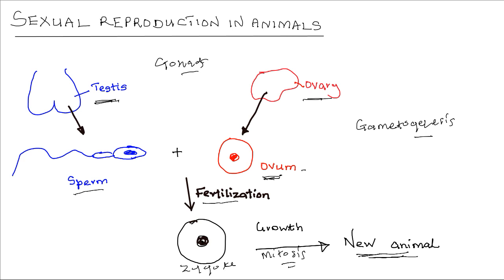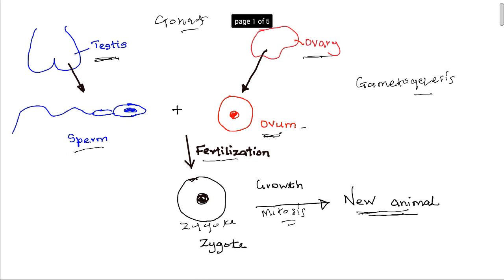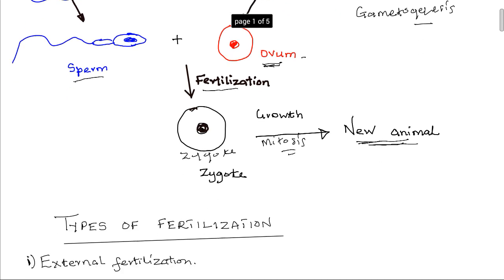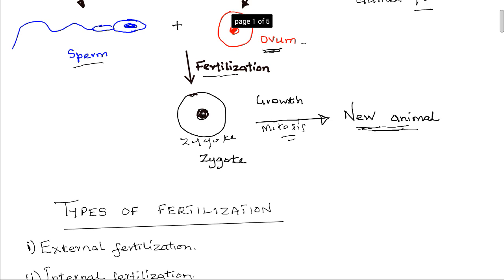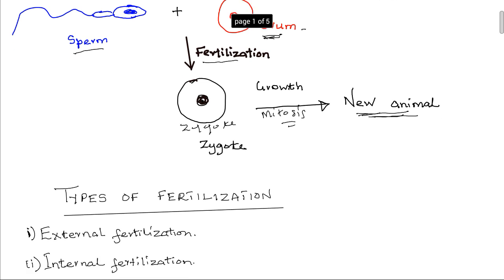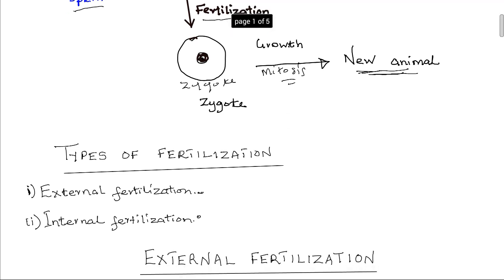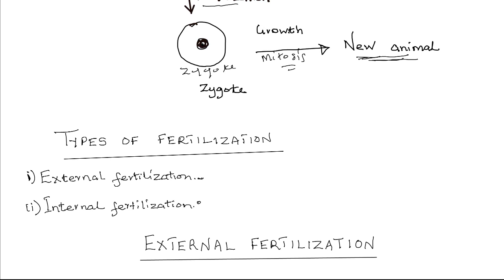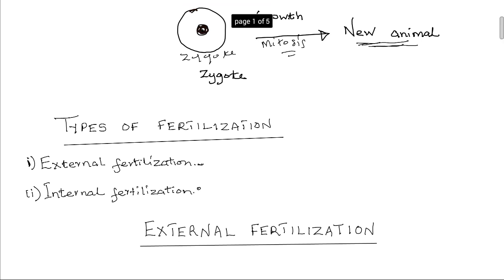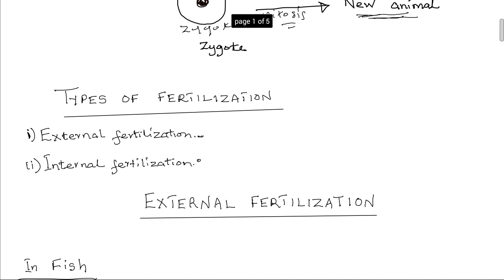The fertilization process may occur internally or externally. In other words, there are two types of fertilization — the one that occurs externally and the other one that takes place internally. We will look at each of the two types and the type of animals where they take place, starting with external fertilization.